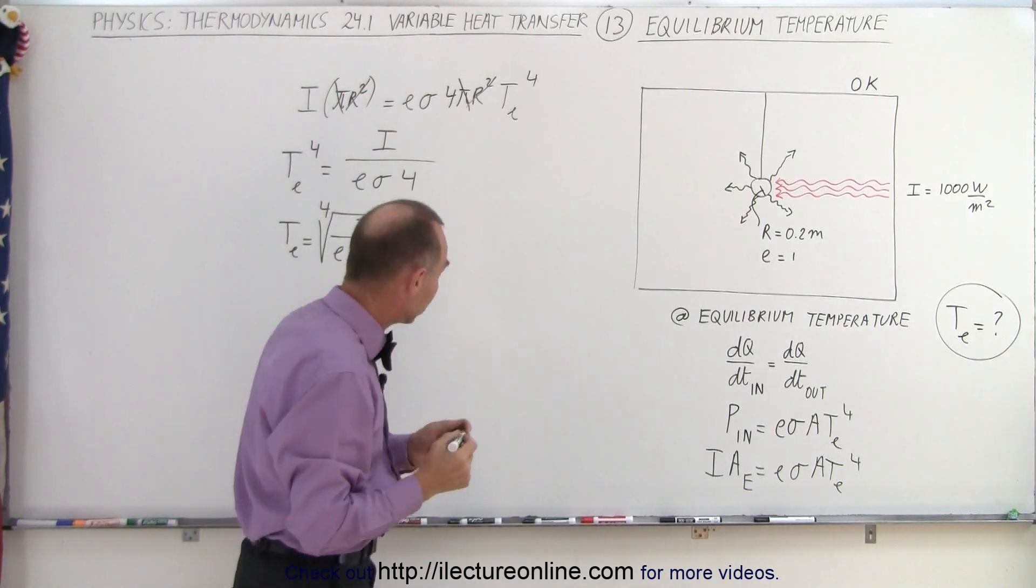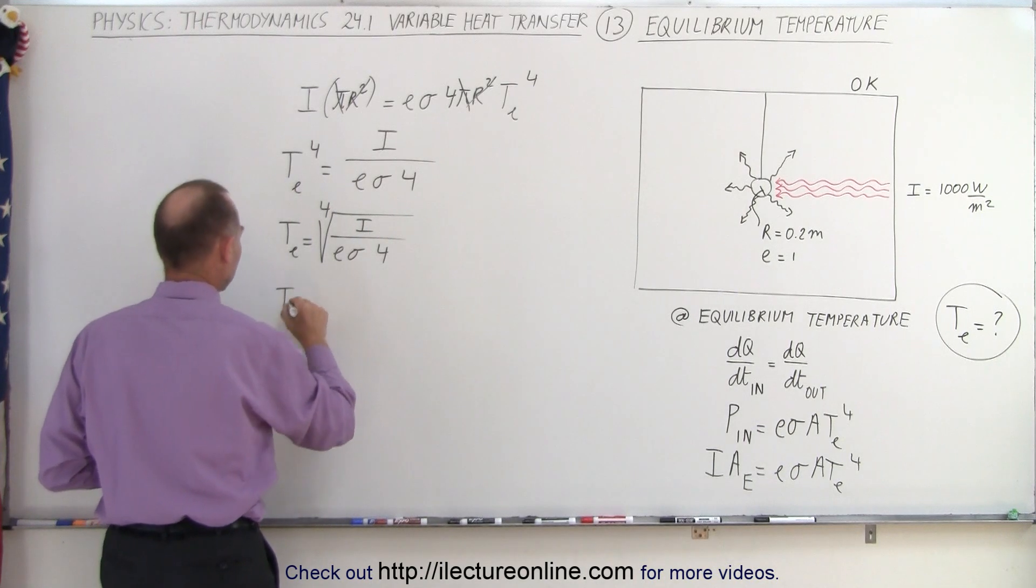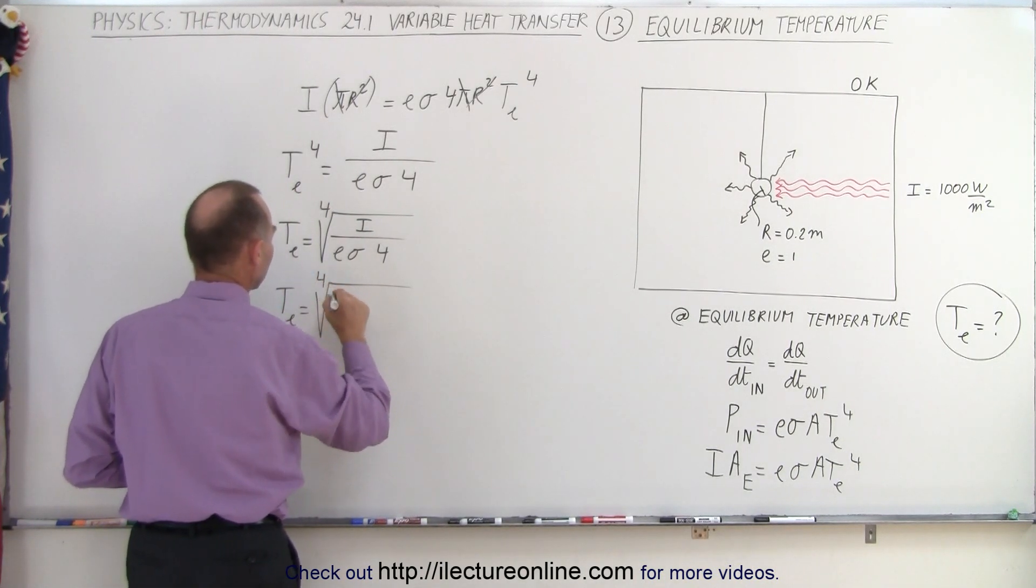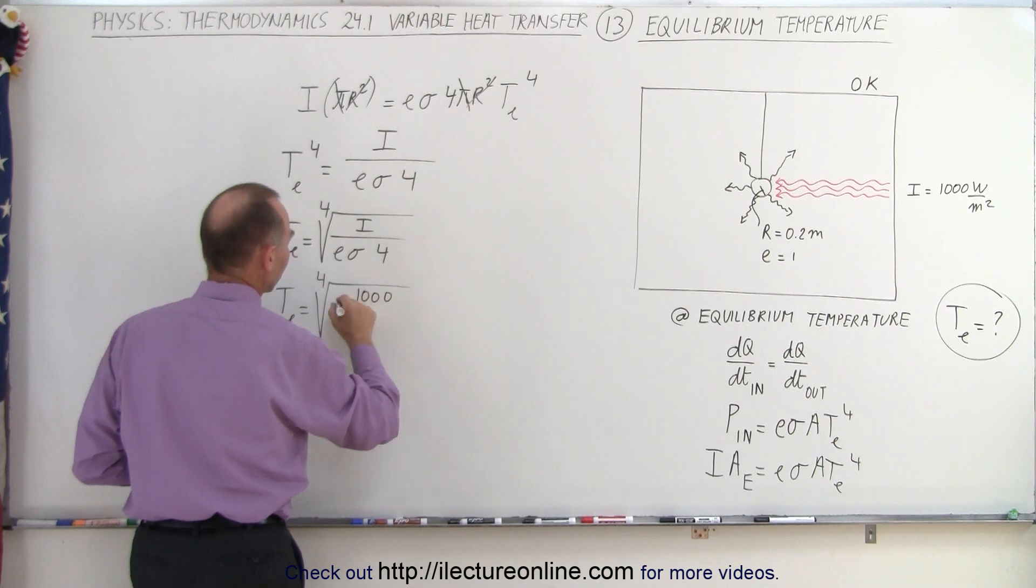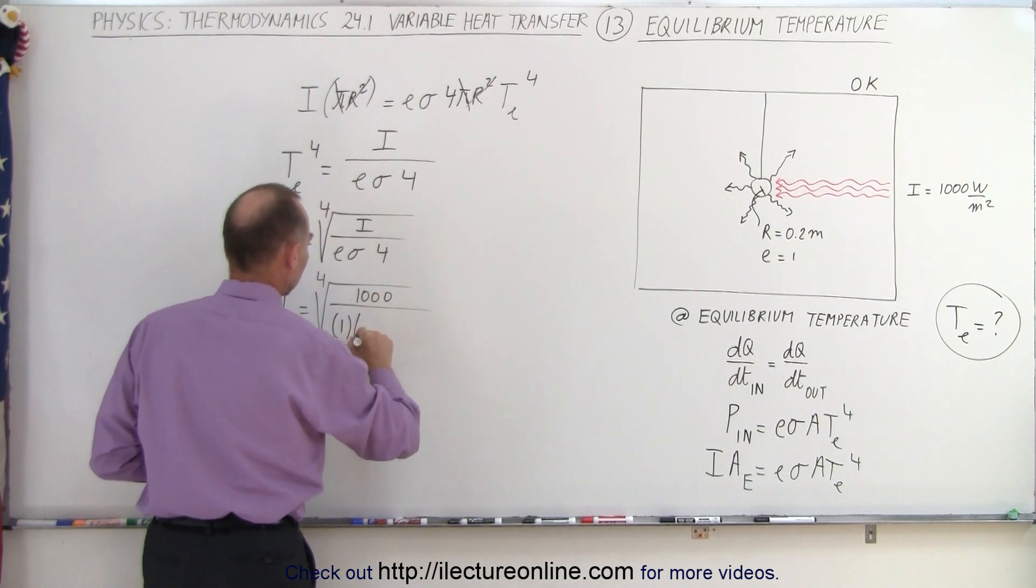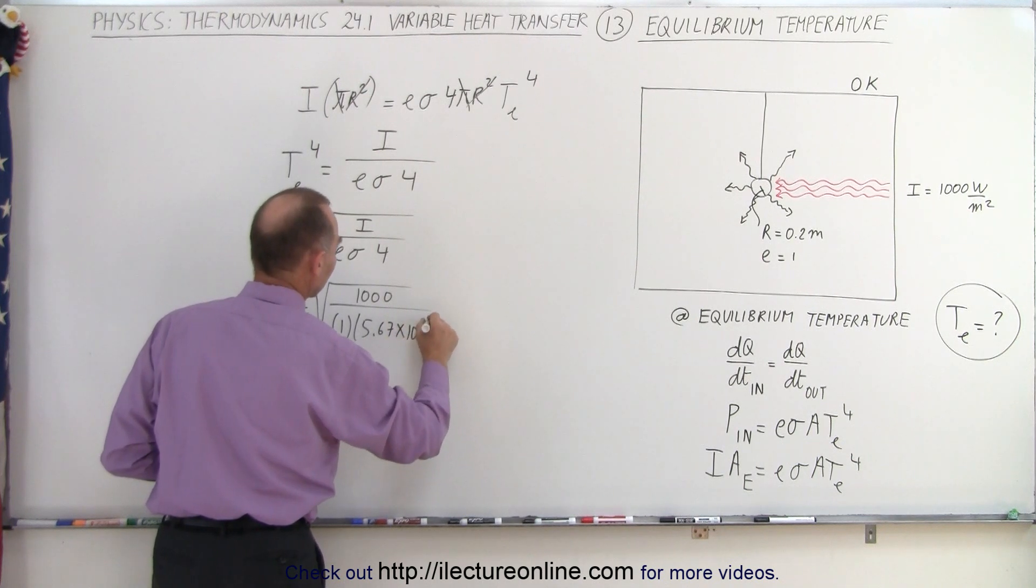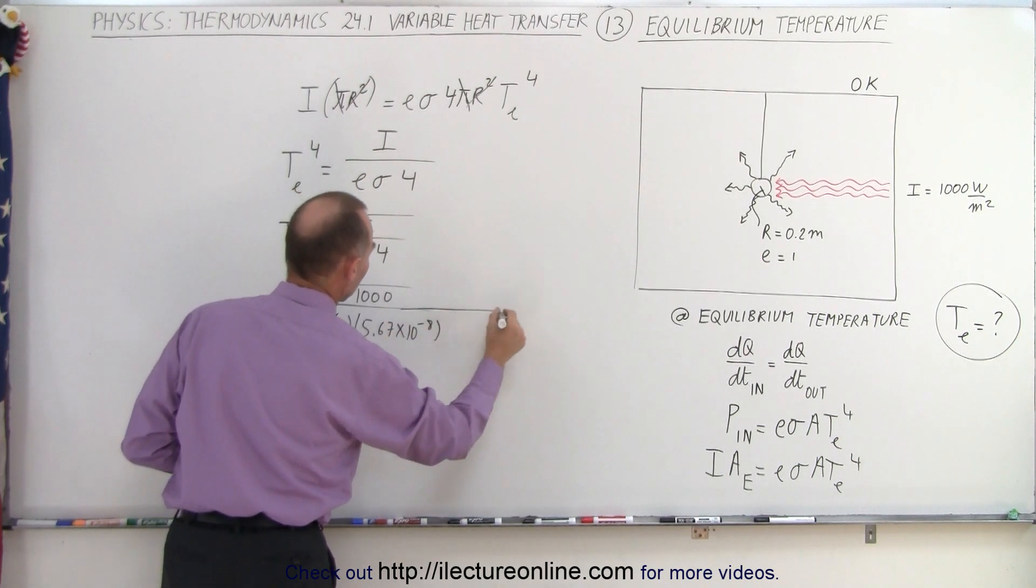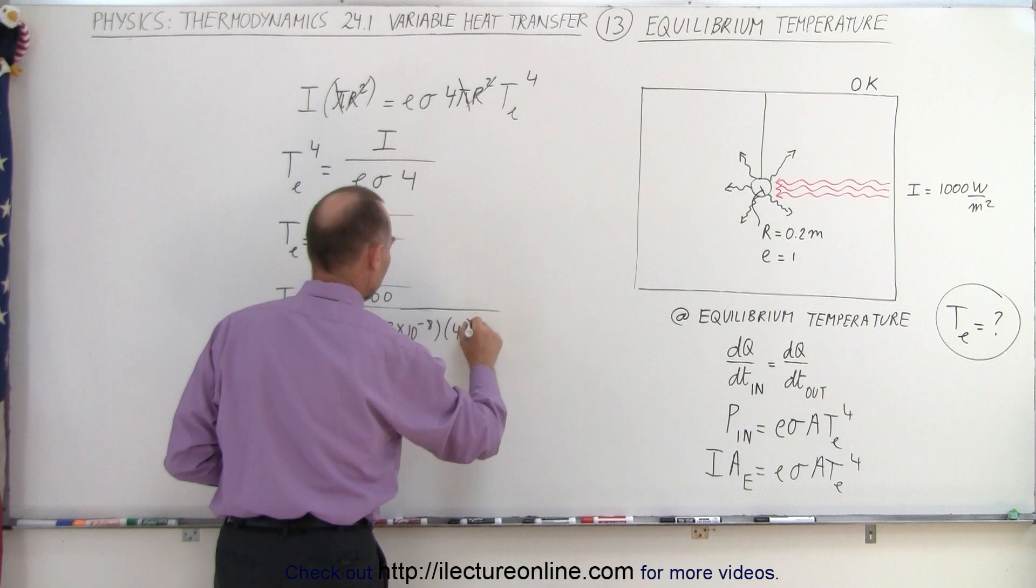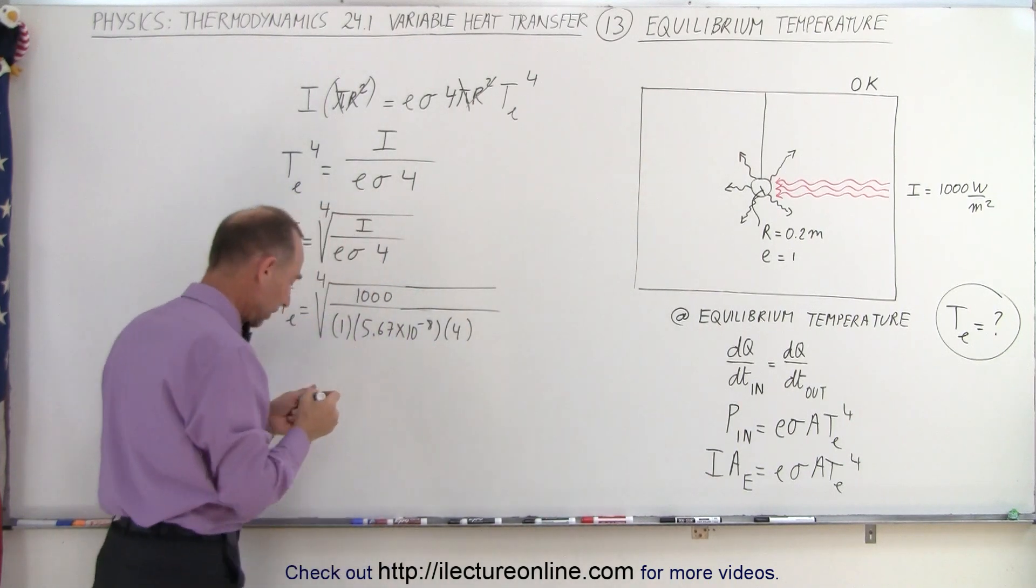Let me plug in the numbers and see what they are. So that would be the fourth root of the intensity, which is 1,000 watts divided by 1. This would be 5.67 times 10 to the minus 8, and times 4, like this.